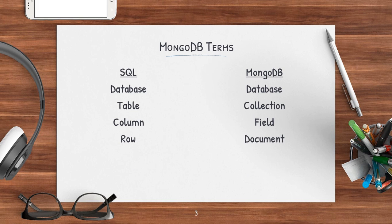Inside the table we have records, which are basically rows, and in MongoDB that is referred to as a document. So the record inside the collection is termed as a document. Now in SQL we have the concept of a foreign key to refer to another SQL table. In MongoDB we have a sub-document. There are two things possible: sub-document without reference and sub-document with reference, which we will cover in the later part of the course.